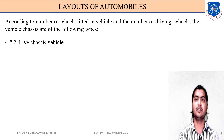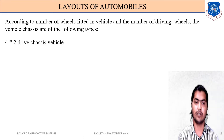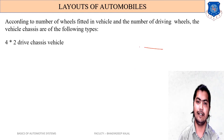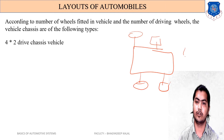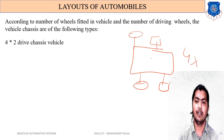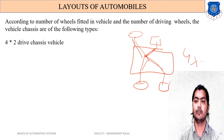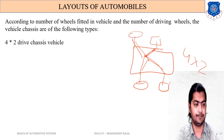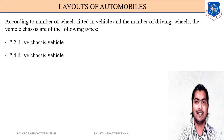In a 4×2 system, the power is transmitted to either two front wheels or two rear wheels. For example, if a vehicle has four wheels and power is transmitted to only two of those wheels — either the front two or rear two — it is called a 4×2 drive chassis system.